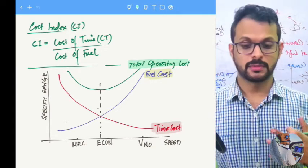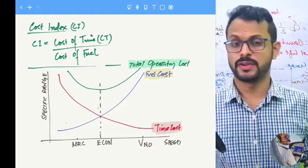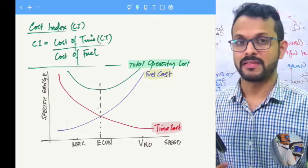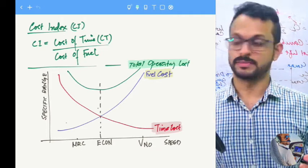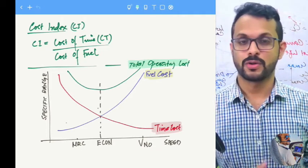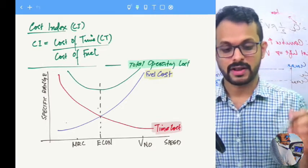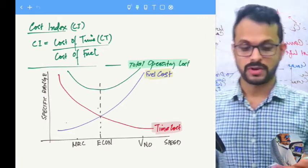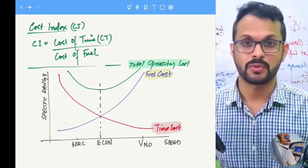Cost index is the ratio of cost of time to cost of fuel. We figured out how to compare these two parameters and come up with speeds that are more economical — the econ speed for aircraft. We also explained the graph plotted between the total operating cost, the time cost, and the fuel cost.